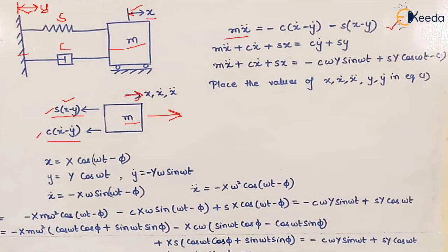Opening the brackets gives terms: c x-dot, c y-dot, s x, and s y. Taking all factors of x to the left-hand side and all factors of y to the right-hand side, we arrive at the standard equation of motion for base excitation.